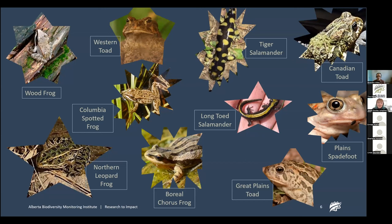These are the amphibians of Alberta. Alberta is home to ten amphibian species: two salamanders, three true frogs, three toads, one tree frog, and one species of spadefoot. You can see them here on our very own amphibian walk of fame — they are cute little guys.